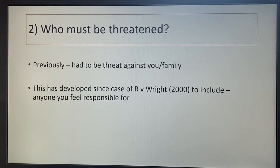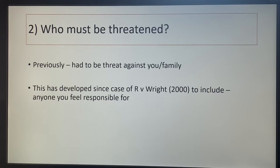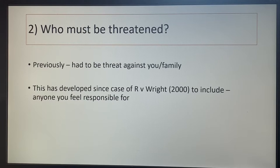Number two: who has to be threatened? Previously it had to be against you or your family — spouse, children, dependents. But in RV Wright 2000, it developed to include anyone you feel responsible for. In RV Wright, her boyfriend was threatened unless she smuggled drugs. On appeal, the court said that was fine — she was responsible for her boyfriend, so she could use the defence. It can also cover a girlfriend, boyfriend, potentially a best friend, though we're not entirely clear on that.